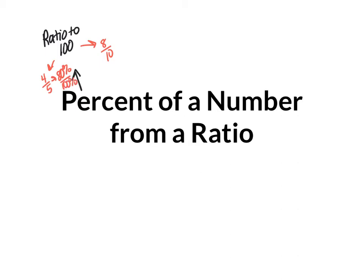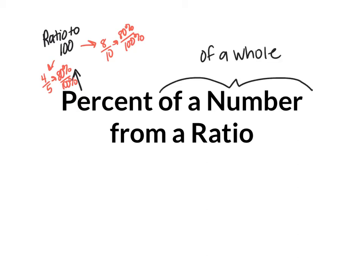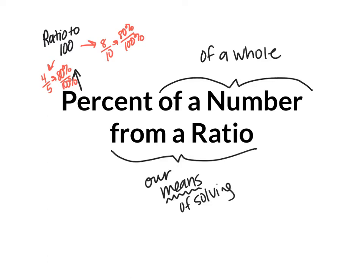Or if on a quiz I got 8 out of 10 correct, that's still 80% out of 100%. Either way, I would have gotten the same grade. When we're talking about a percent of a number, we're referring to a percent of a whole amount. From a ratio is just our means of solving it. We can find a percent of a number by using decimals or fractions, but we're specifically going to use ratios to find these parts of a whole.